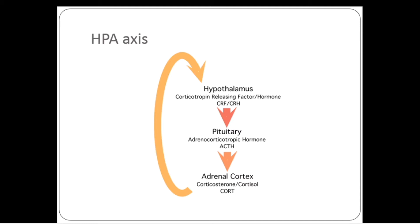The hypothalamus regulates the pituitary through stimulating and inhibitory hormones, and the pituitary in turn produces hormones that act on several glands throughout the body — not just the adrenal cortex as shown in this picture, but many other glands as well.